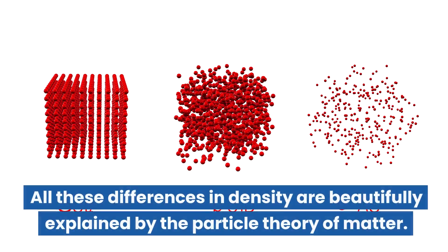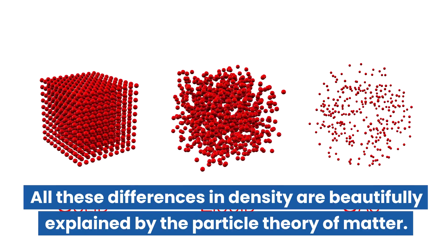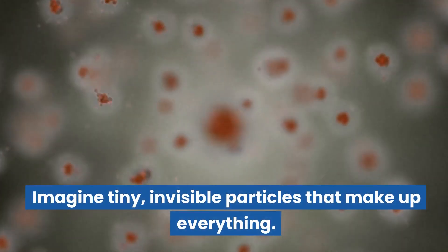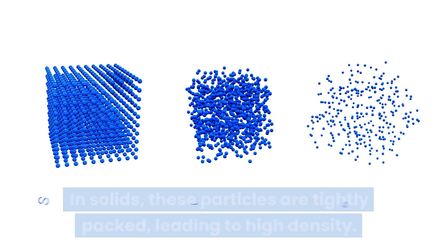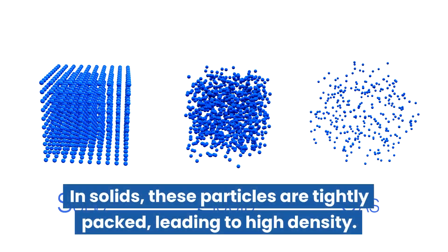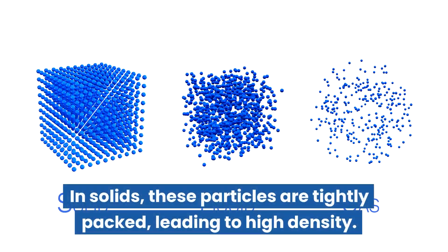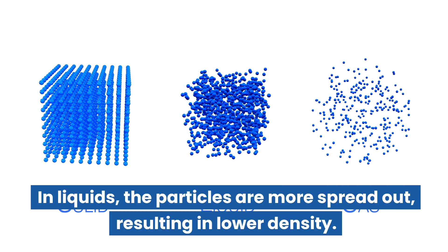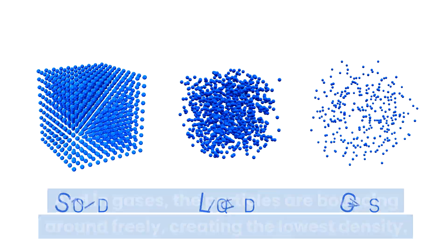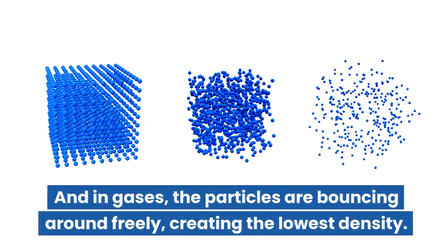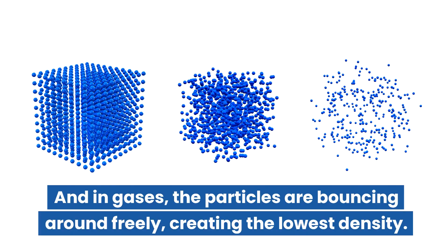All these differences in density are beautifully explained by the particle theory of matter. Imagine tiny invisible particles that make up everything. In solids, these particles are tightly packed, leading to high density. In liquids, the particles are more spread out, resulting in lower density. And in gases, the particles are bouncing around freely, creating the lowest density.